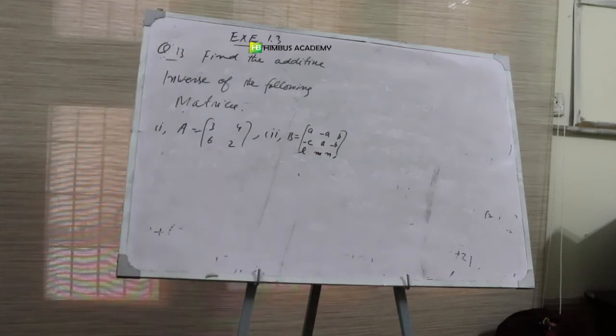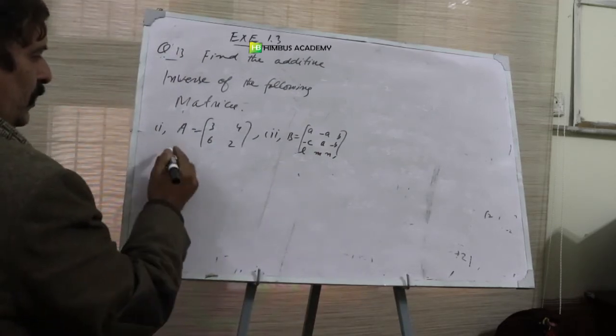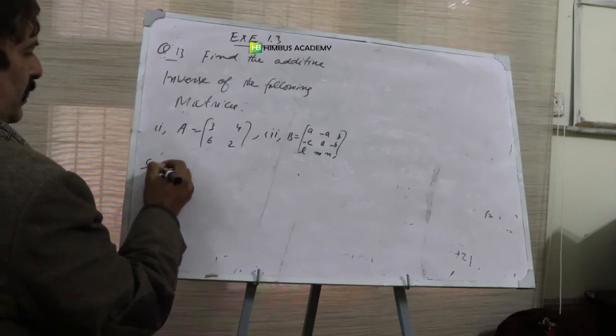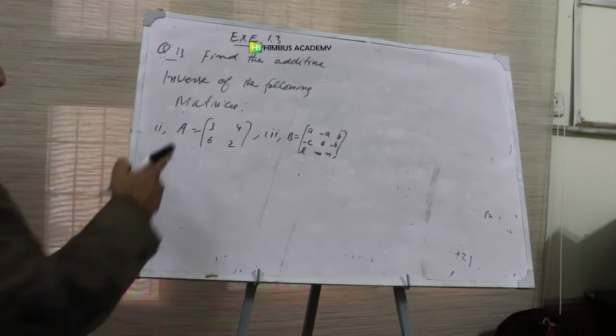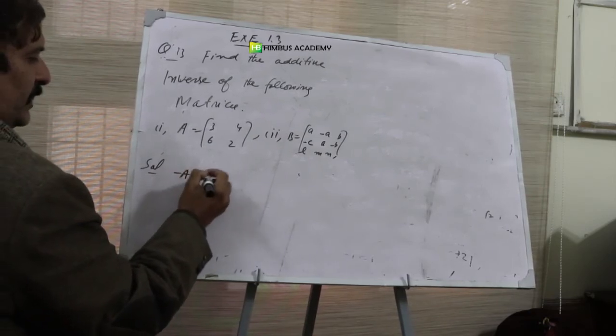ADTO inverse means the value remains the same but the sign is different. So A's ADTO inverse should be minus A.